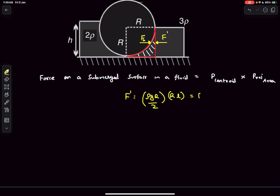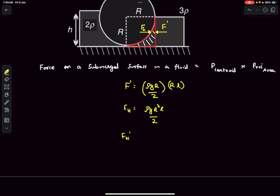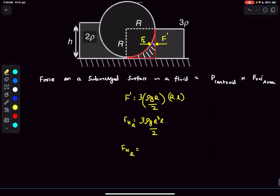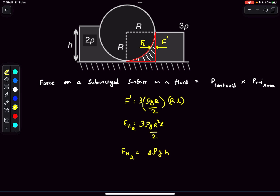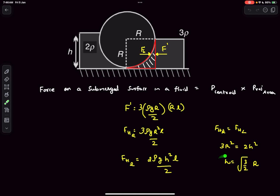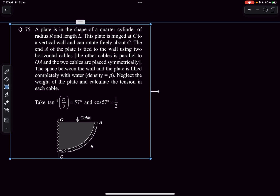We've now found FH, the horizontal component of the force that the right liquid applies on the cylinder. The density of the right fluid is 3ρ, so I need to include that factor. By the same argument, the force applied by the left fluid (density 2ρ) is 2ρh²l/2. These are the only two horizontal forces on the cylinder, so they must be equal. Setting FH_right equal to FH_left and solving, we get h = √(3/2) · r, which is the required answer.